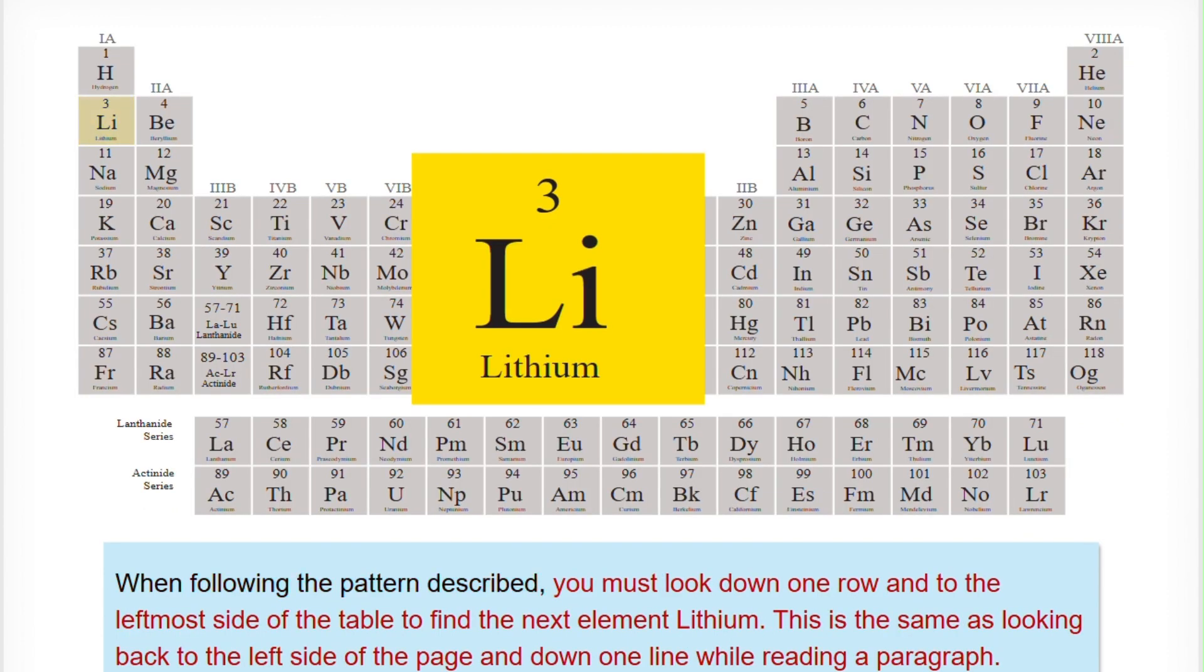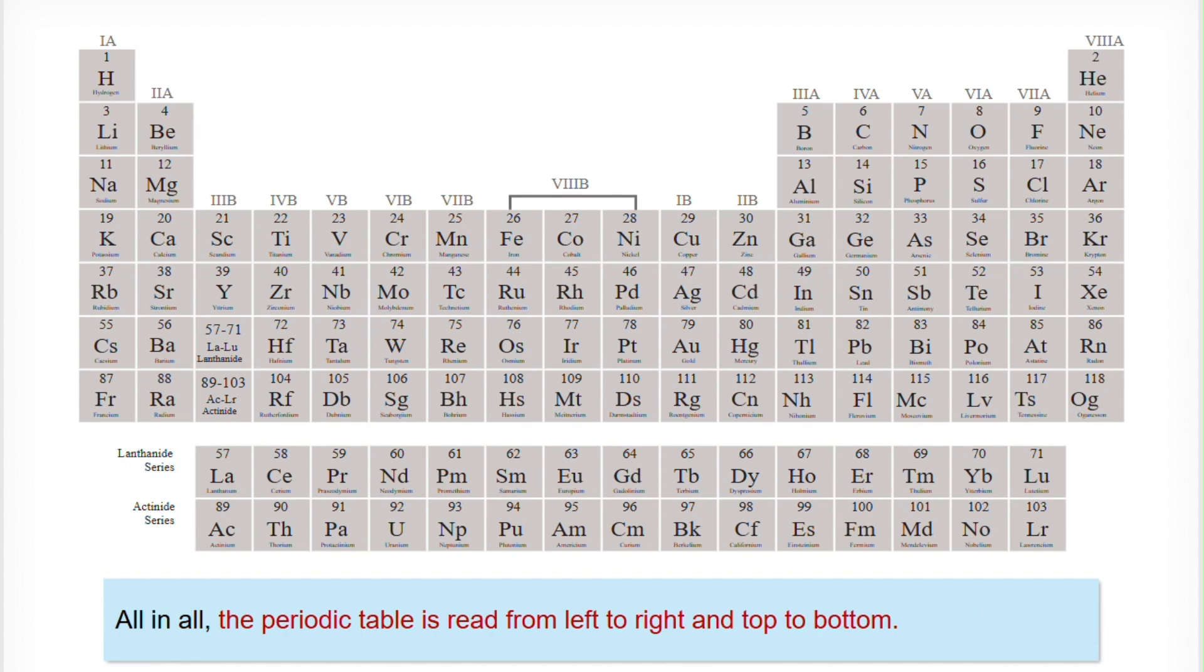When following the pattern described, you must look down one row and to the leftmost side of the table to find the next element, lithium. This is the same as looking back to the left side of the page and down one line while reading a paragraph. All in all, the periodic table is read from left to right and top to bottom.